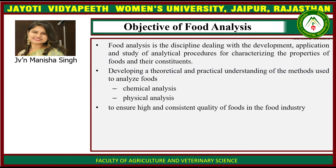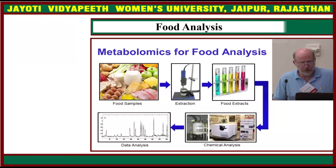Developing a theoretical and practical understanding of the methods used to analyze foods includes chemical analysis and physical analysis. We need to have some food samples for which we first do some extraction. When we get food extracts, we analyze them chemically, get the data, and then interpret this data by data internal analysis.